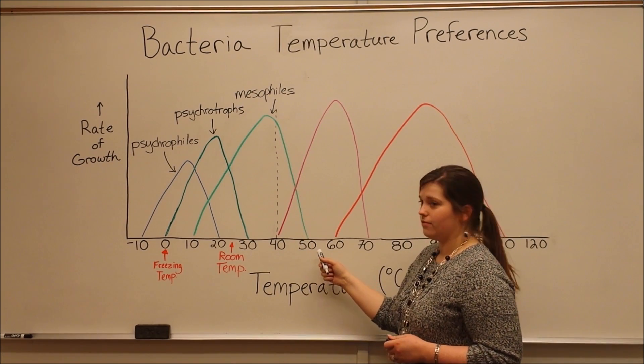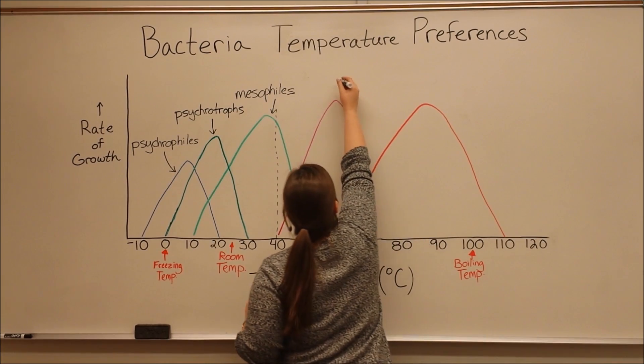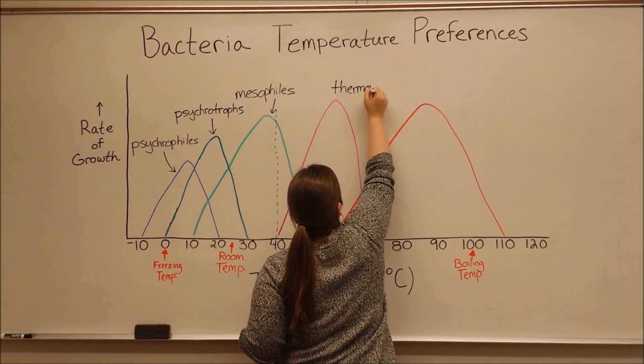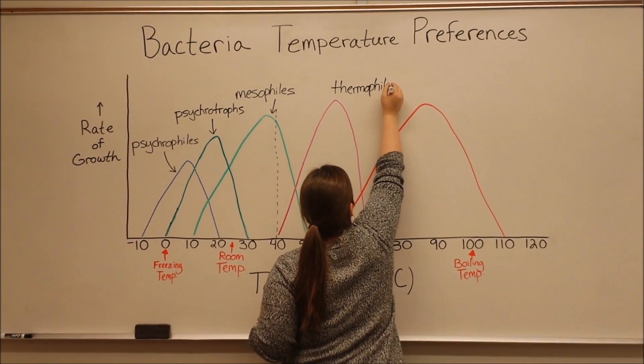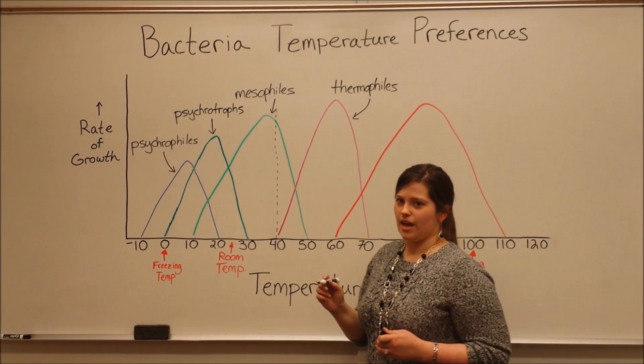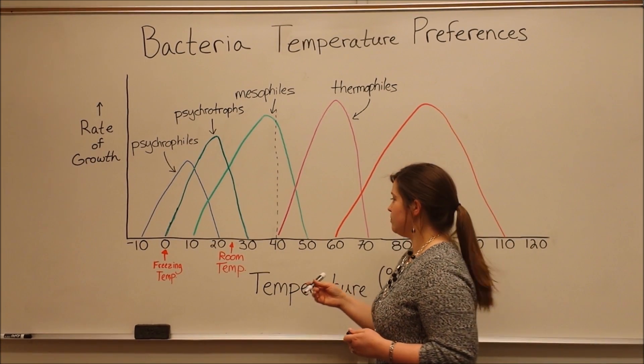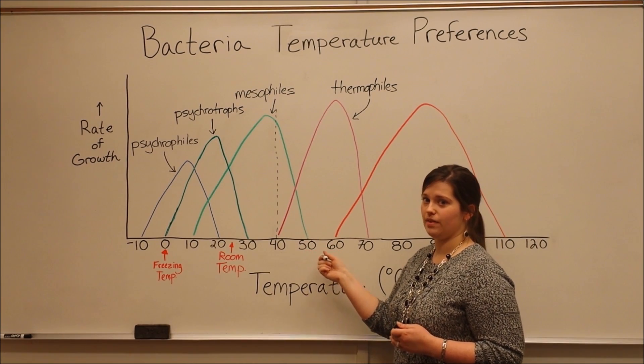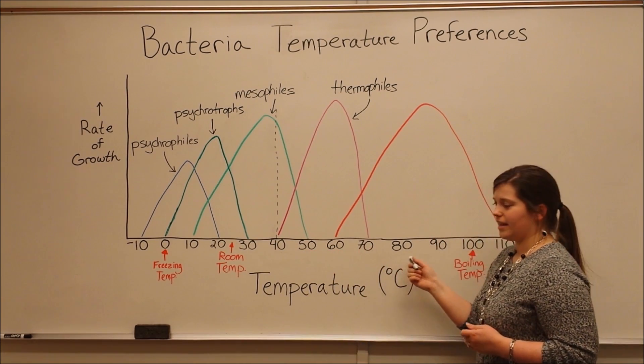Then we have thermophiles. These are bacteria that prefer warmer temperatures, so we're getting up into this 50 to 60 degrees Celsius being their optimal growth range. And then finally, on the warmest end of the temperature spectrum, we have hyperthermophiles.